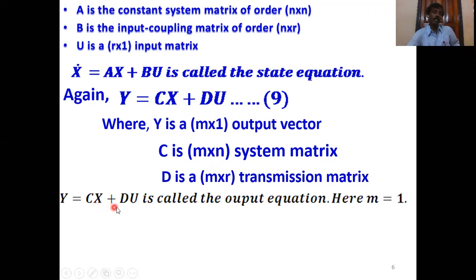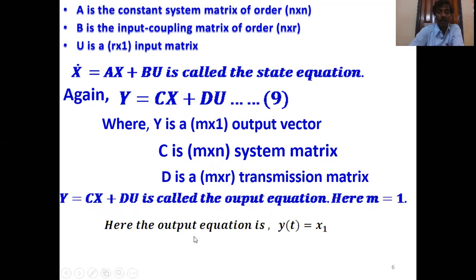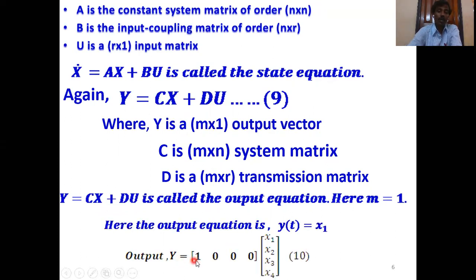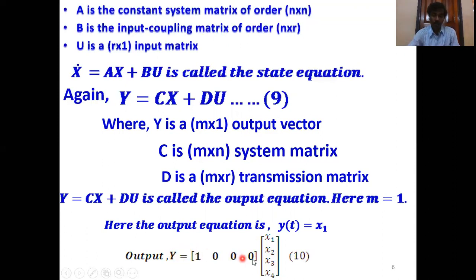So Y = CX + DU is called the output equation. Here in this problem, m equals 1. Then Y(t) equals X1. Output Y(t) equals always X1. Then output Y(t) = [1, 0, 0, 0] · [X1, X2, X3, X4]ᵀ. This is equation number 10. Y(t) equals X1 + 0·X2 + 0·X3 + 0·X4. So Y(t) equals X1. This is the output.